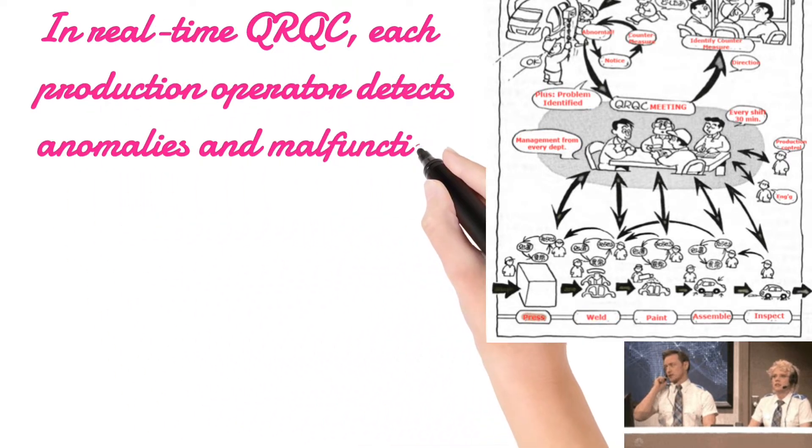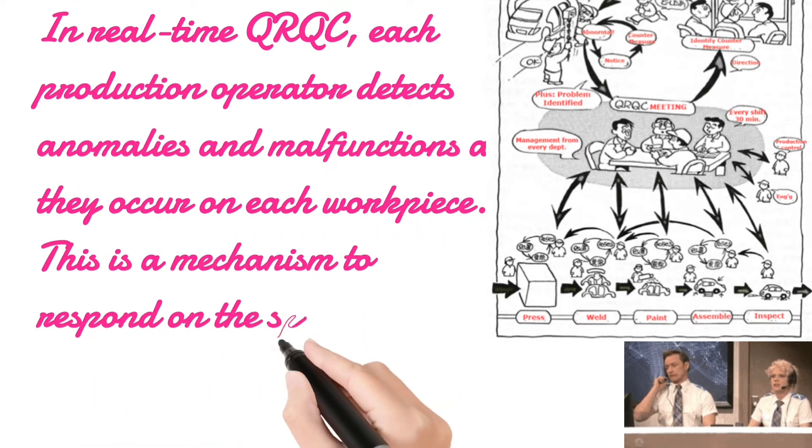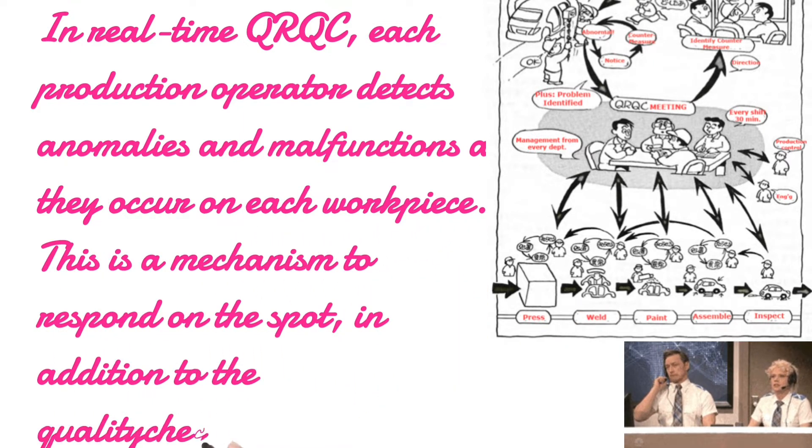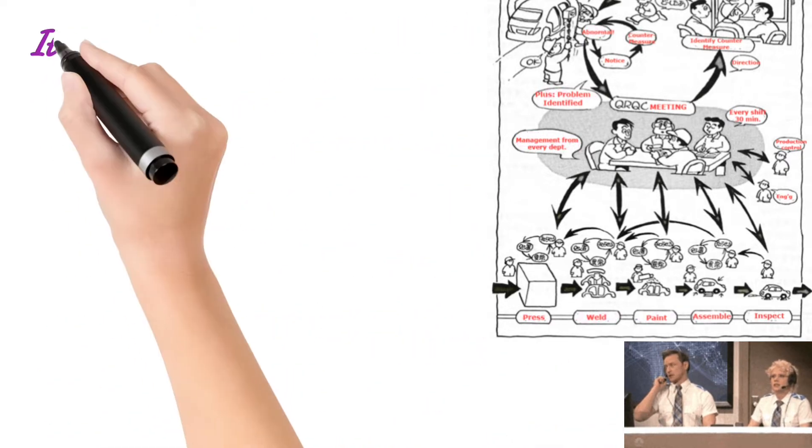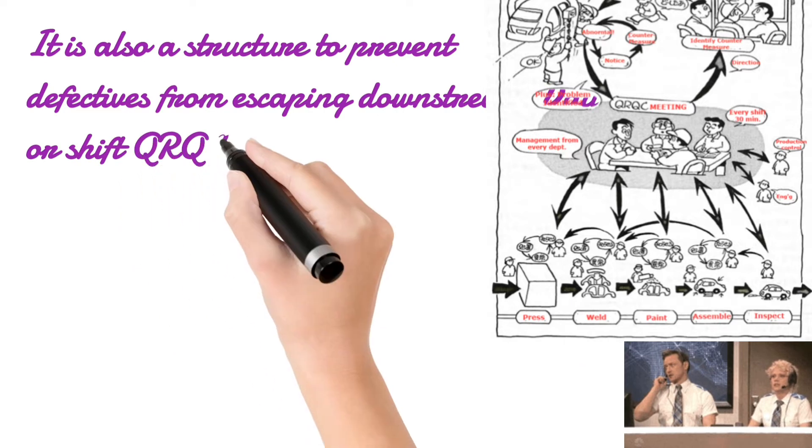In real-time QRQC, each production operator detects anomalies and malfunctions as they occur on each workpiece. This is a mechanism to respond on the spot in addition to the quality checkpoints. It is also a structure to prevent defectives from escaping downstream.